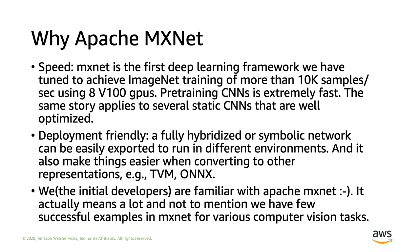First of all, speed. MXNet is the first deep learning framework with which we have been able to tune and achieve ImageNet training of more than 10,000 samples per second using only 8 V100 GPUs. Pre-training CNNs on ImageNet is a crucial step in 2018, as training a backbone network is a very important task in so many computer vision tasks. The same story applies to several other network training pipelines, especially static networks such as single-stage object detectors.